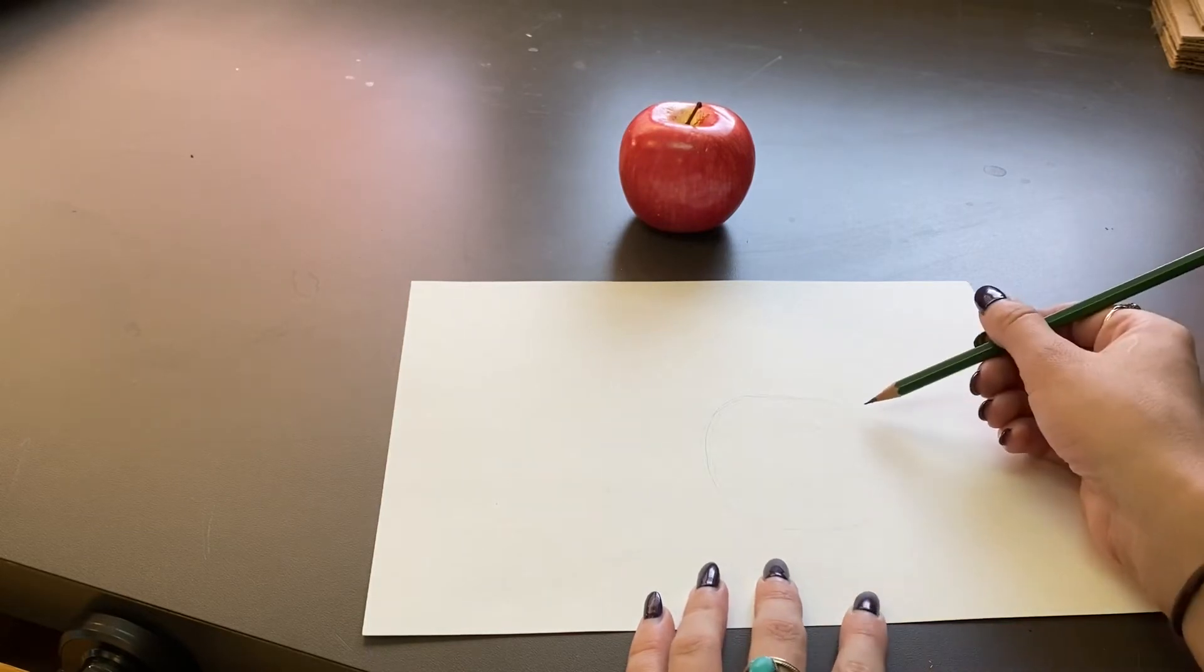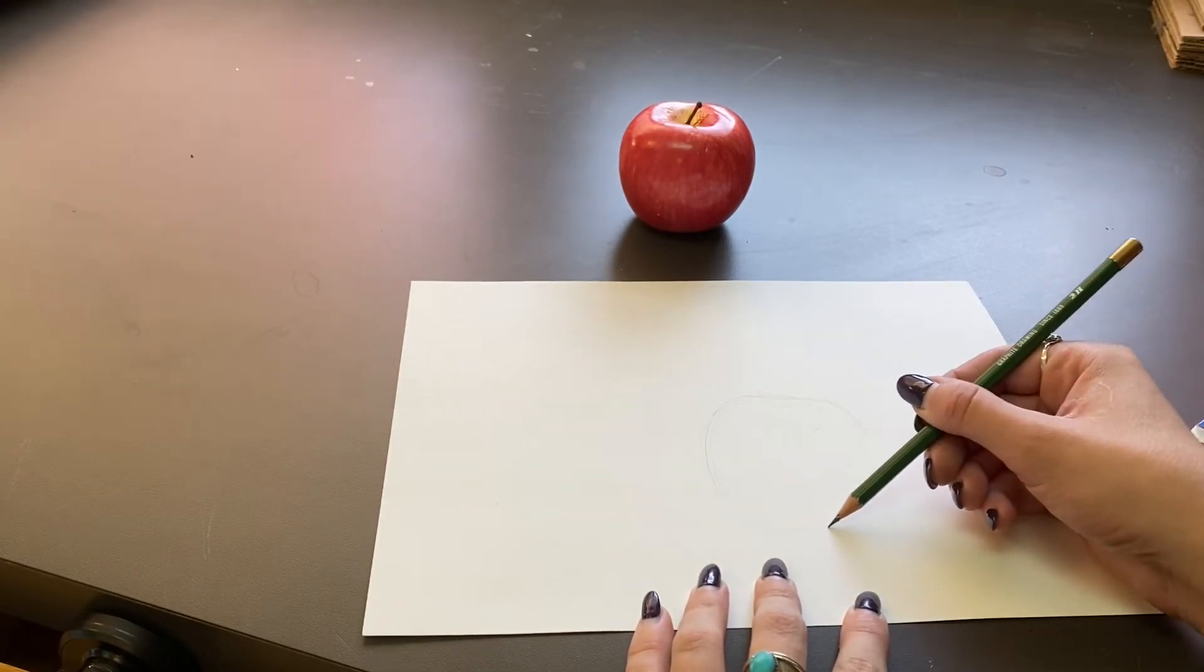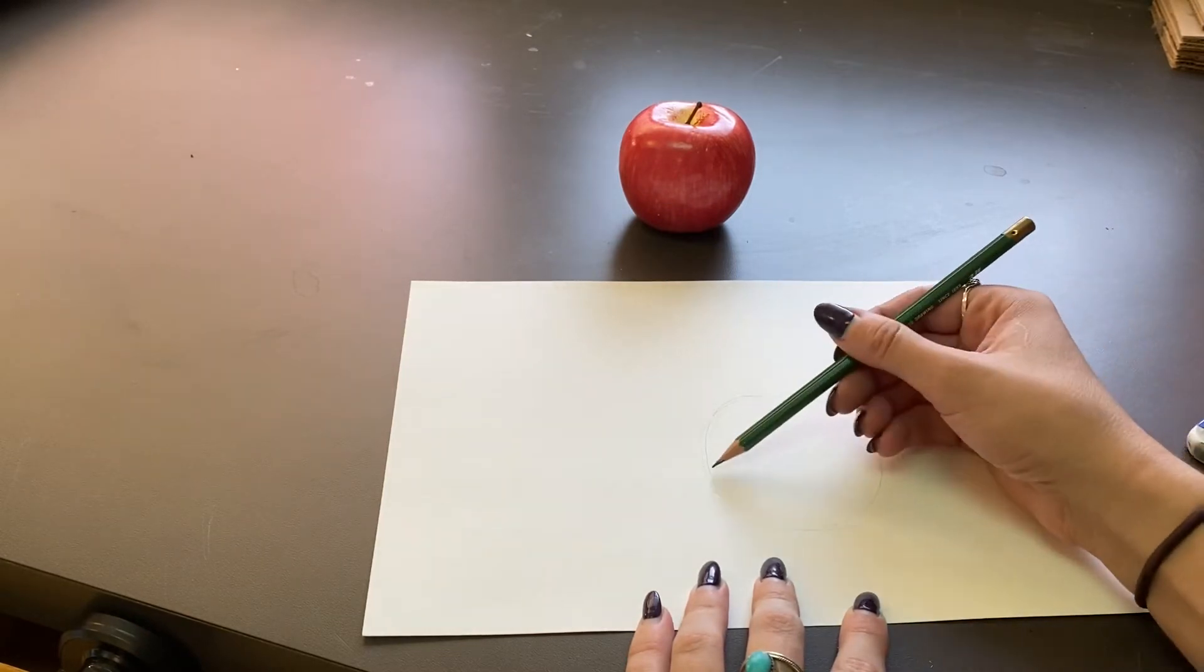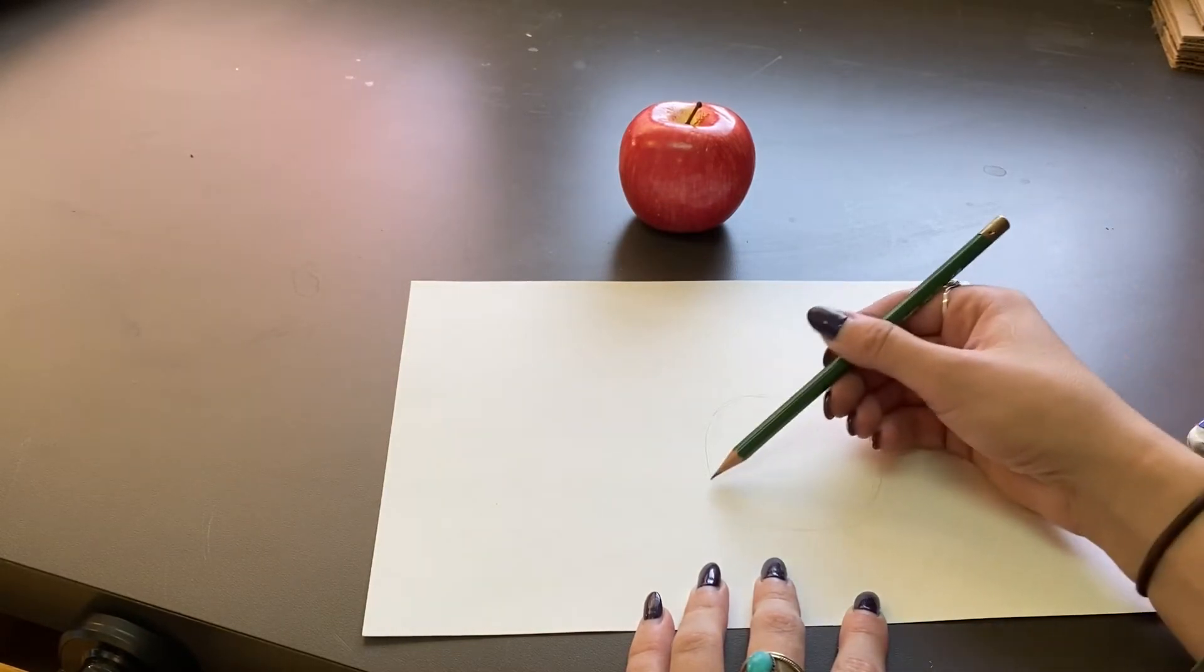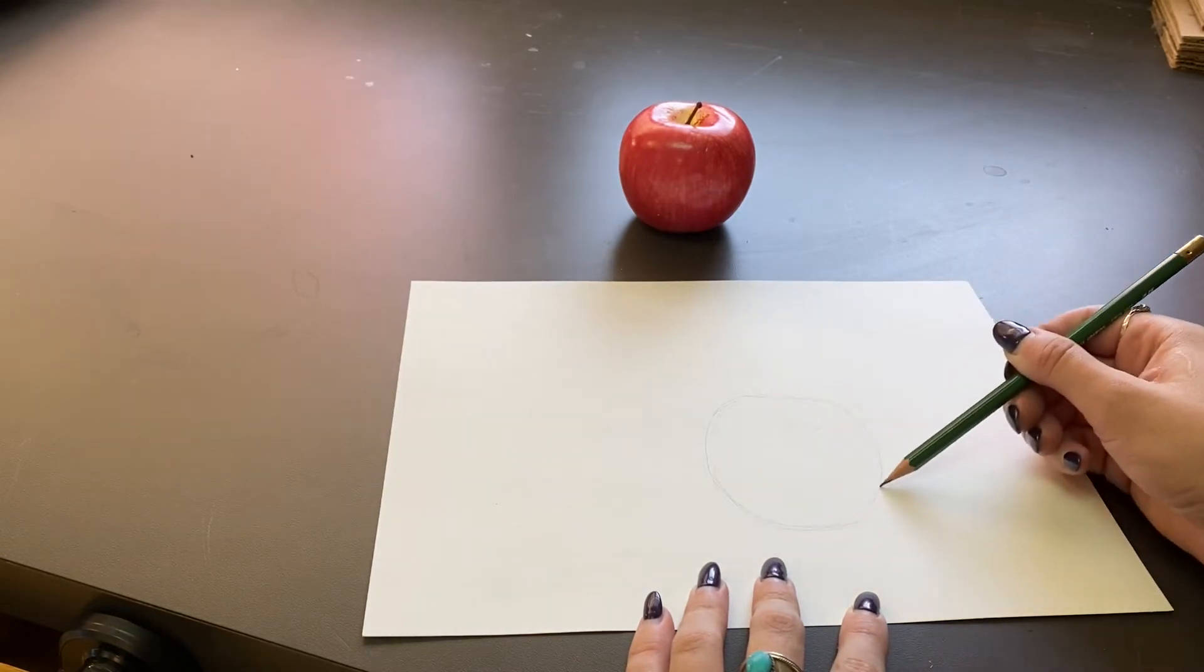Also notice my hand. Do you see how far back I'm holding the pencil? That's so that I apply a little bit of pressure. It's very light and that's going to create some light lines.